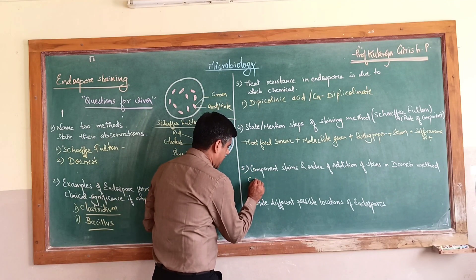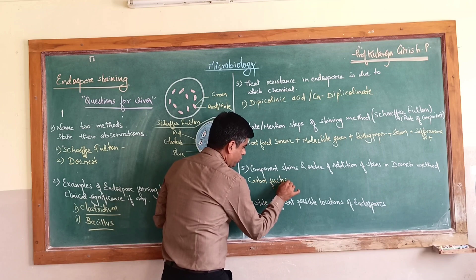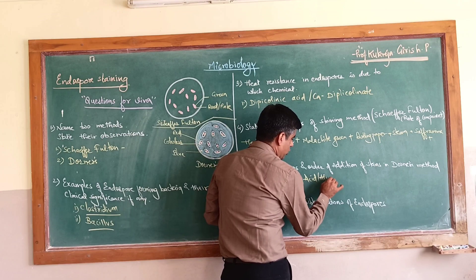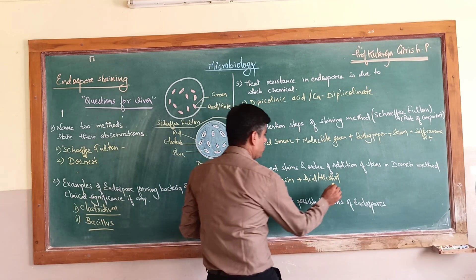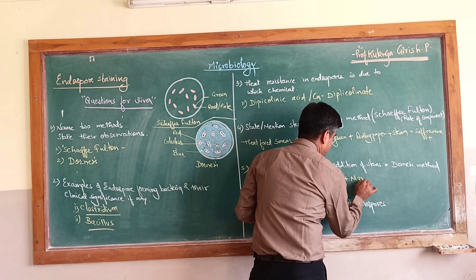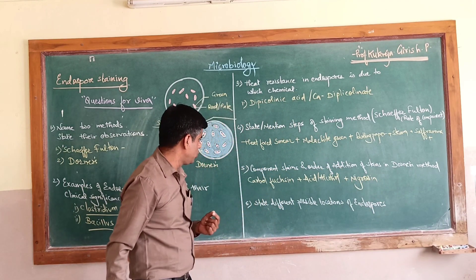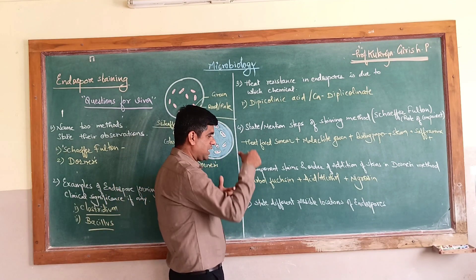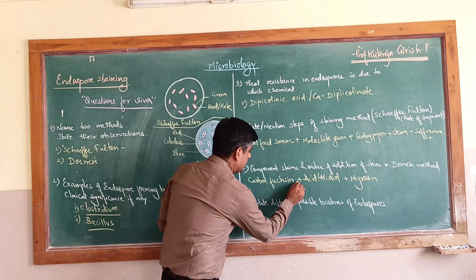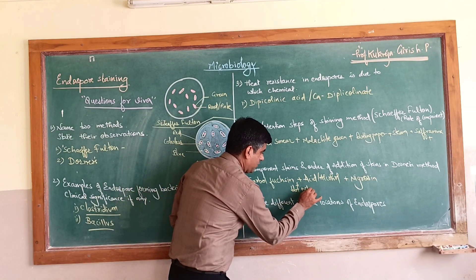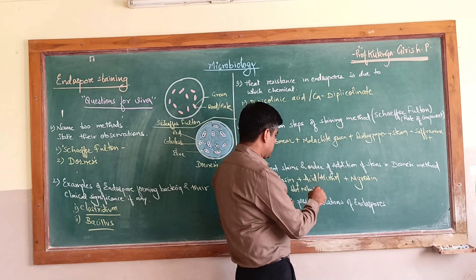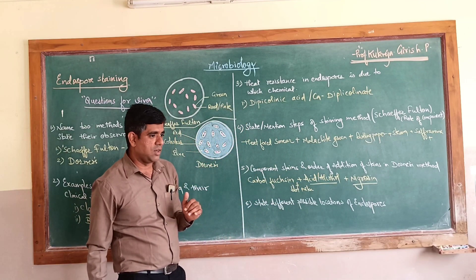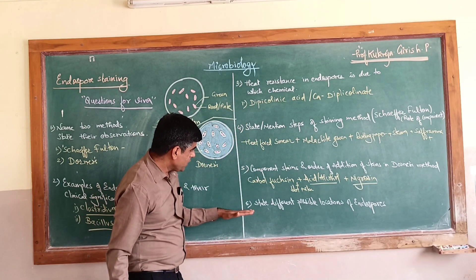In Dorner's method, you use carbol fuchsin as the primary stain on a heat-fixed smear, with blotting paper and steaming. Then acid alcohol is used as the decolorizer, followed by nigrosin — a negative stain — and then you observe under the microscope.